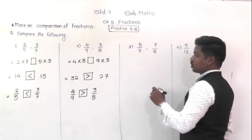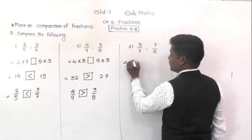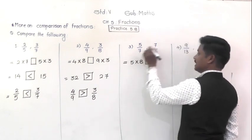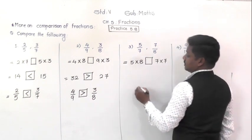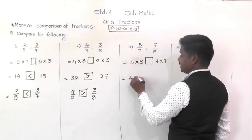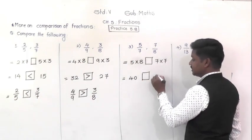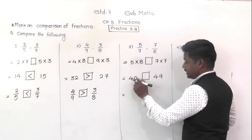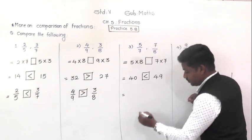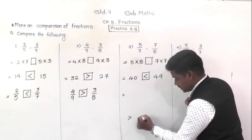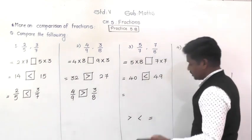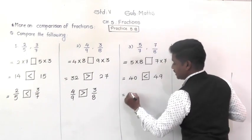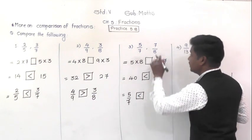Example 3: Compare 5/7 and 7/8. Cross multiply: 5 × 8 = 40 on the left, and 7 × 7 = 49 on the right. Between 40 and 49, the greater is 49, so 40 is less than 49. The greater than (>), less than (<), and equal to (=) signs are used here. Since 40 < 49, therefore 5/7 is less than 7/8.